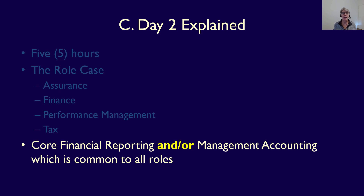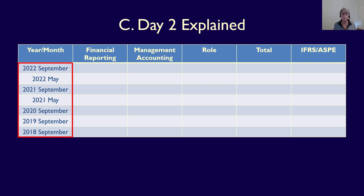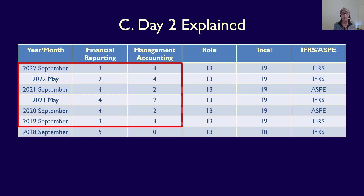Note that 'and/or' means it may be that the common competencies are all financial reporting, all management accounting, or both. Looking at a chart tracking the last five years of CFEs, you can see columns for the year and month of the CFE, the number of financial reporting issues, management accounting issues, issues in each role, total issues, and whether the case covered IFRS or ASPE. Over the last six CFEs, both financial reporting and management accounting have been covered, and there has always been a total of six common issues — either a 2-4 split or a 3-3 split.